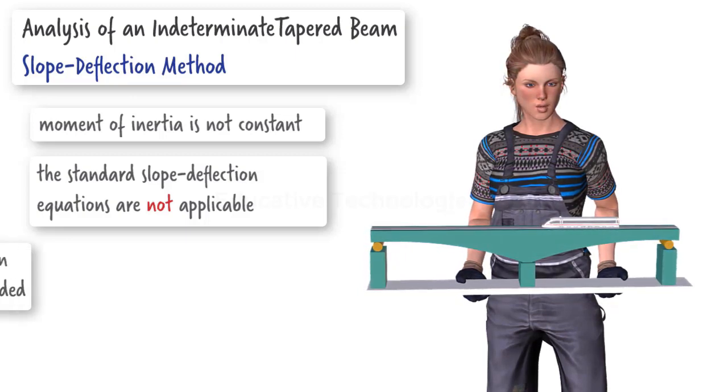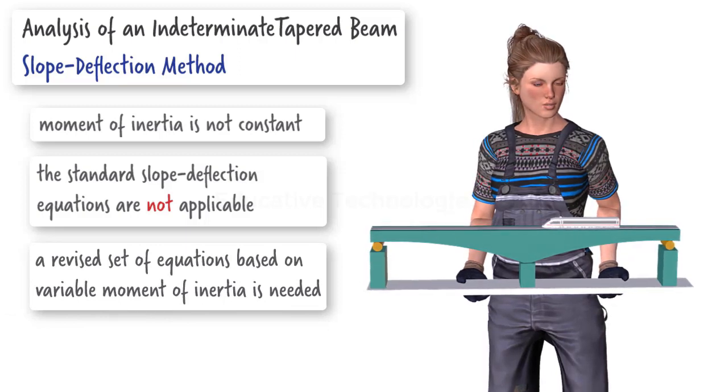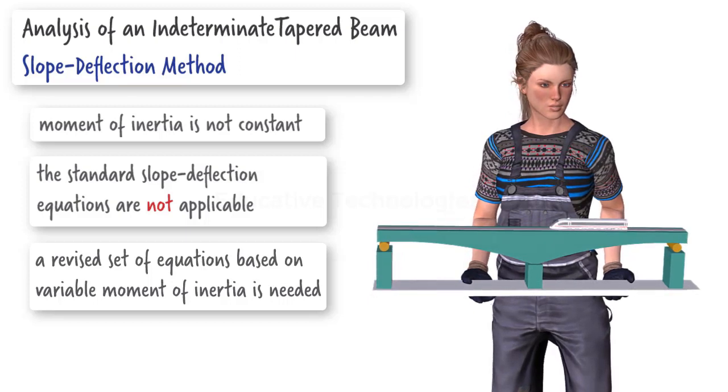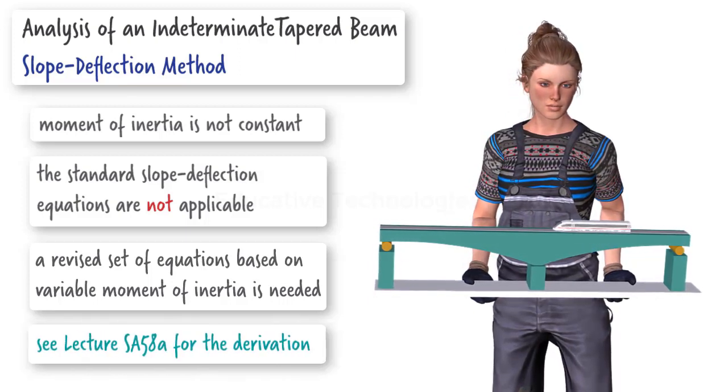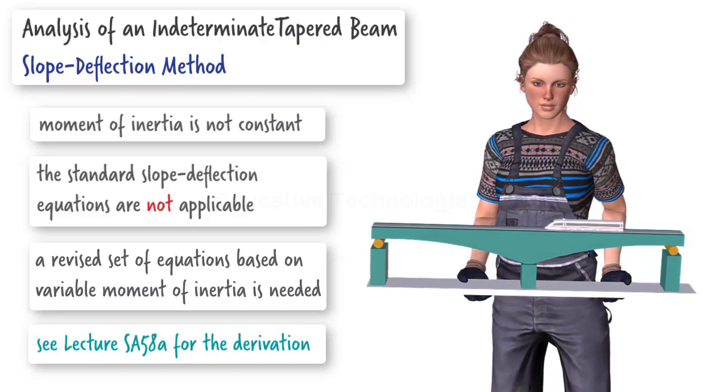So we need to use a revised set of slope-deflection equations for analyzing the beam. The derivation of the slope-deflection equations based on a varying moment of inertia is presented in an accompanying video lecture. Please review lecture SA58A before proceeding with this one.